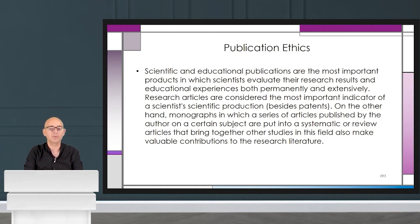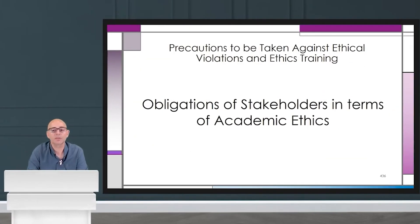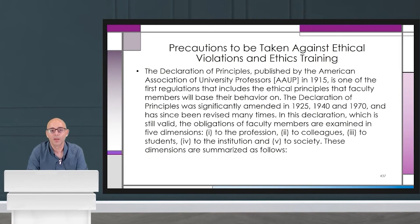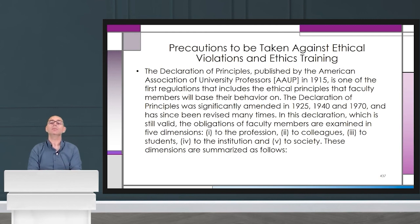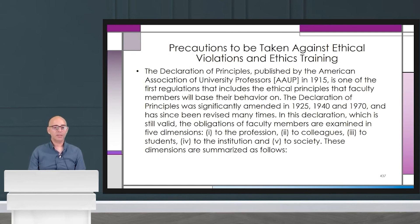The next topic is the obligation of stakeholders in terms of academic ethics. The Declaration of Principles published by the American Association of University Professors in 1915 is one of the first regulations that includes the ethical principles that faculty members will base their behavior on. The declaration was significantly amended in 1925, 1940, and 1970, and has since been revised many times.